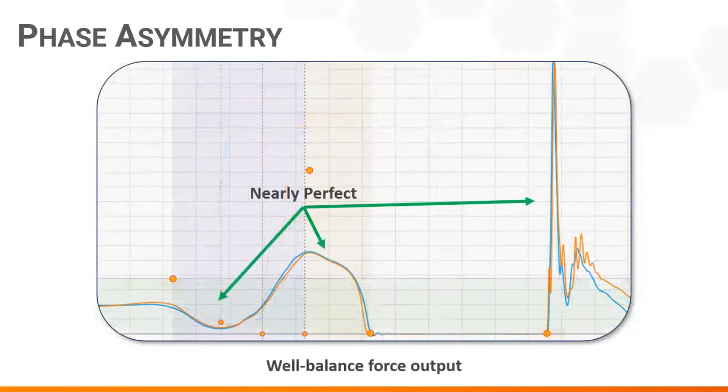Let's go ahead and keep things simple. Here we see a nearly perfect countermovement jump repetition. We know it's a well-balanced force output from this individual because the left and right sides are nearly in complete harmony with one another.